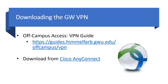To get started, visit the off-campus access VPN guide available through Himmelfarb Library. Instructions are available for downloading and connecting to the VPN on this site. The first step is to download the VPN client from Cisco AnyConnect. Once you've downloaded the VPN client, locate and start the Cisco AnyConnect program on your computer.